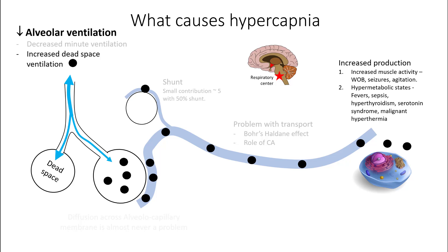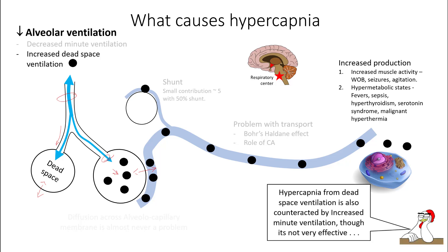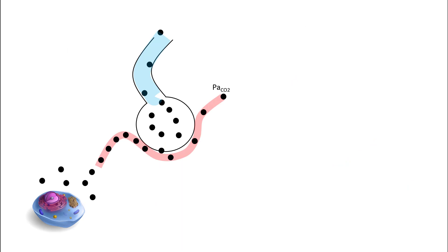The second reason for decreased alveolar ventilation is increase in dead space ventilation. So your minute ventilation can remain the same. However, if your ventilation is going more into the areas of dead space where there is no CO2 exchange, overall the alveolar ventilation, where the CO2 can really get exchanged, can drop down. So that can result in hypercapnia. Hypercapnia from dead space ventilation is also counteracted by increase in minute ventilation.